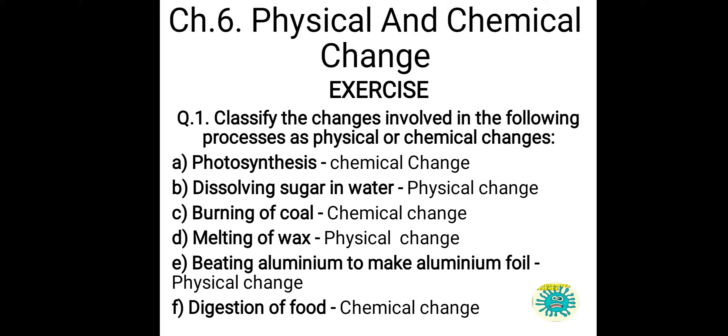You have to classify the substances whether they are chemical or physical changes. Photosynthesis is a chemical change. Dissolving sugar in water is a physical change. Burning of coal is a chemical change. Melting of wax is a physical change. Beating aluminium to make aluminium foil is a physical change, and digestion of food is a chemical change.